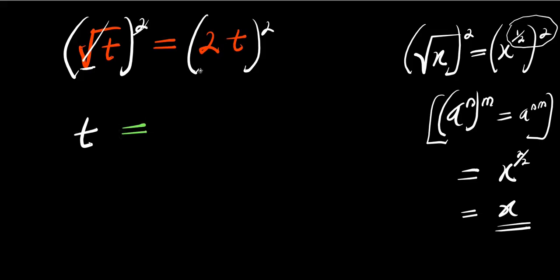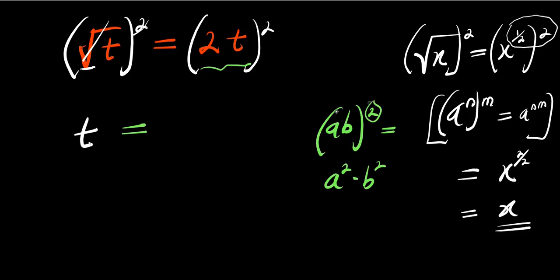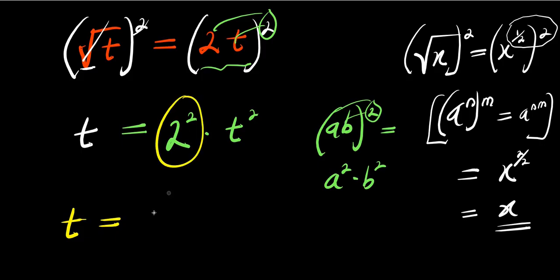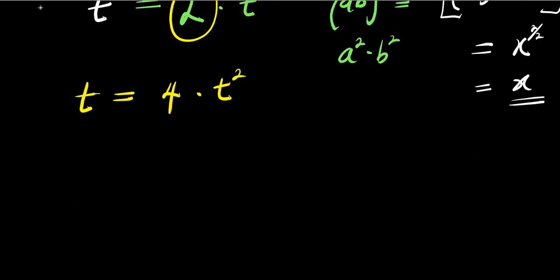And this equals — on the right side, this is like writing (a × b)² = a² × b². So we are going to have 2 to the power of two times t to the power of two, distributing this power of two to each term. So from here we have t equals 2² is 4, times t², giving us t equals 4t squared.